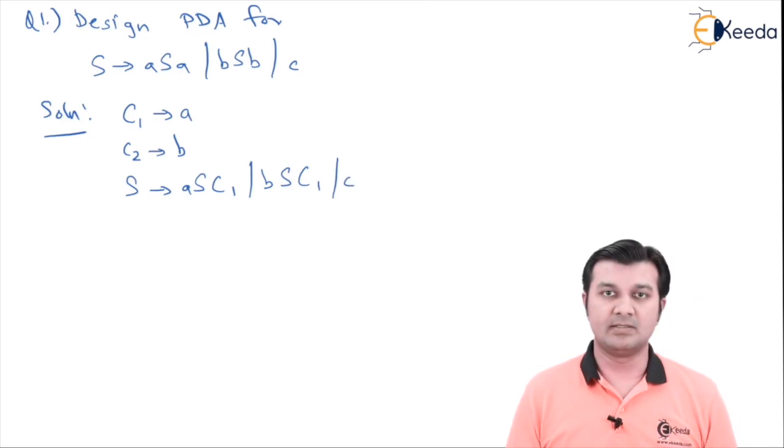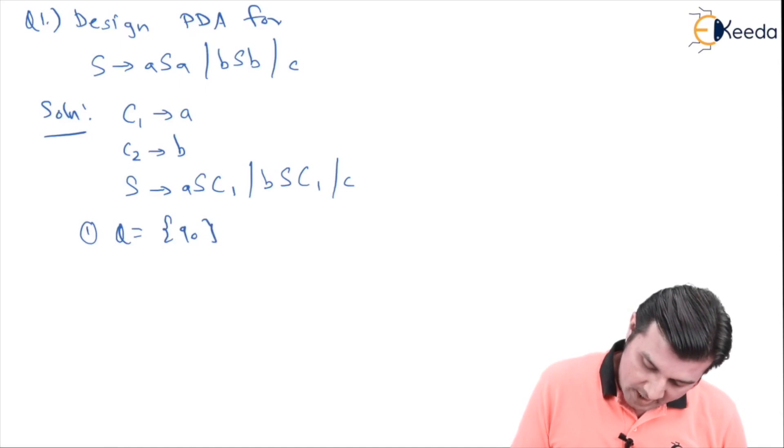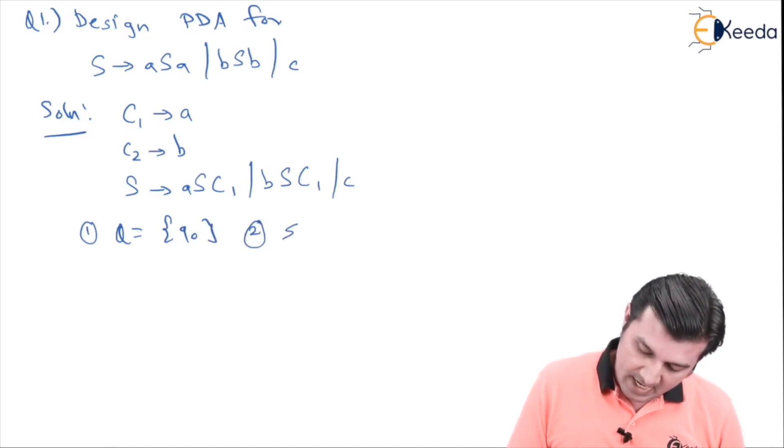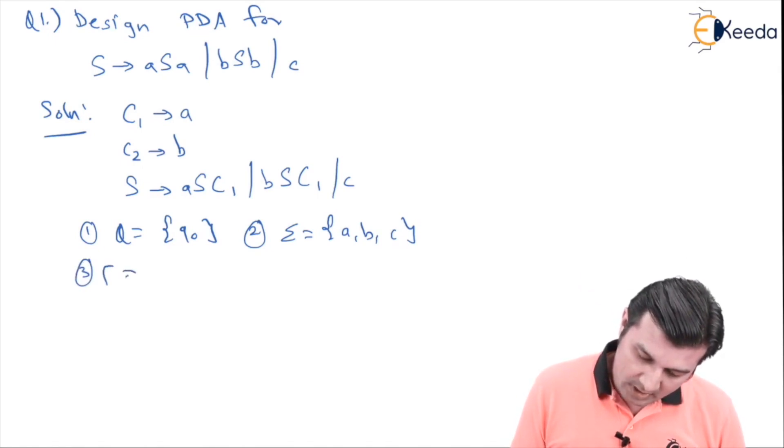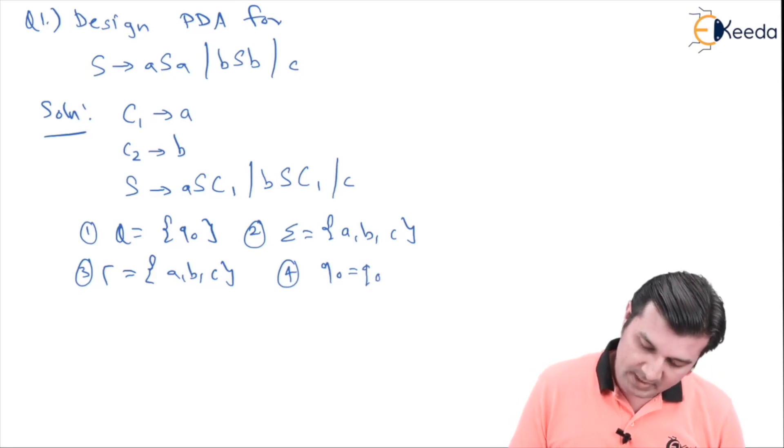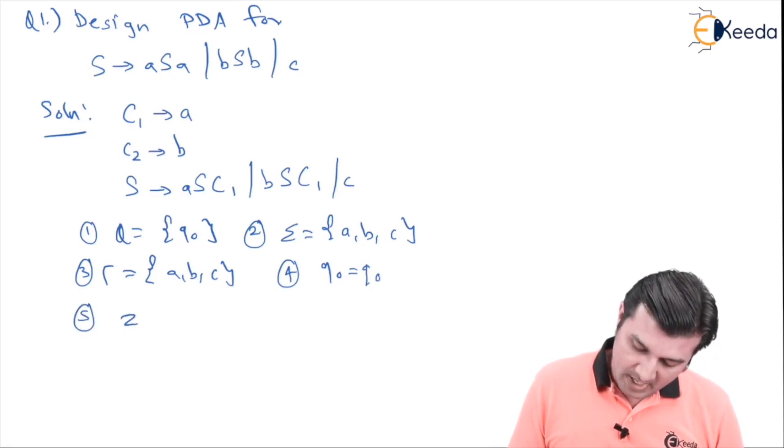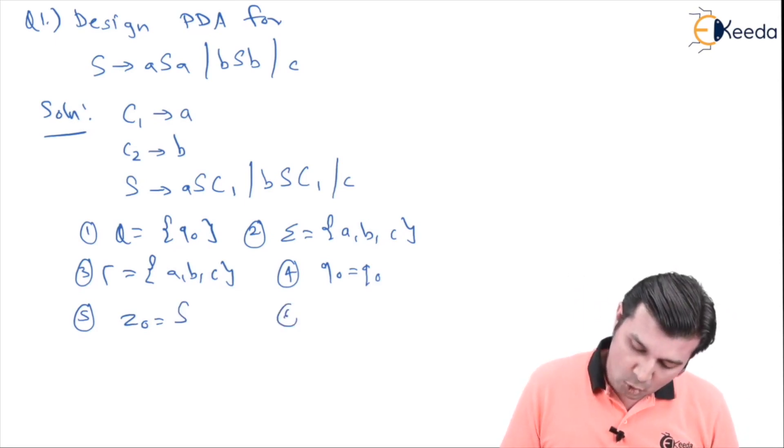Further going ahead, over here I have my Q to be my q0. Next I have my input alphabet as a, b, and c respectively. Third, my start state q0 remains as q0 always. My z0 is going to be the start symbol which is capital S, and as I told you before, the final state is going to be empty.